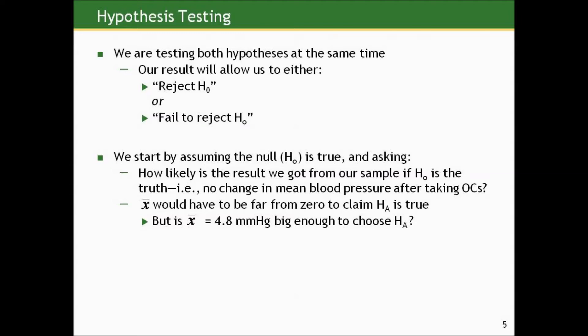Here's how you do all hypothesis tests. We start by assuming the null is true — assuming that the mean change in blood pressure at the population level is zero, no difference in the after mean and the before mean. Then we ask: how likely is the result that we got if the null is true? We got a sample mean change of positive 4.8 millimeters. That's certainly bigger than the null of zero, but it's just an estimate of the true mean. Our sample mean would have to be pretty far from zero to claim the alternative — that the true mean is not equal to zero — is true.